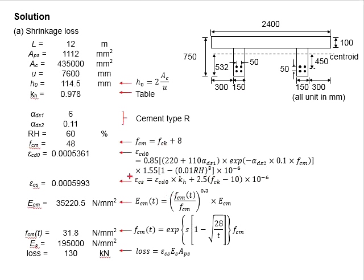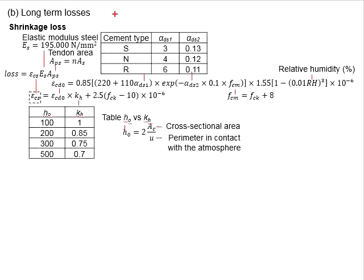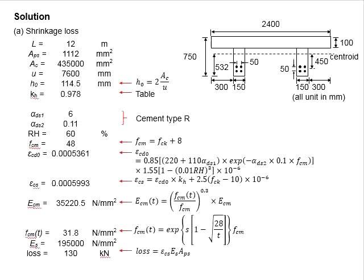Then your next step is to determine the epsilon_cs based on the equation here. You need f_ck which is equal to 40, and you will need this k_h times h. The factor k_h can be determined from the table here, which you need to first determine the h_0.